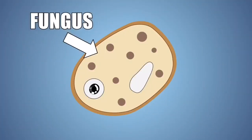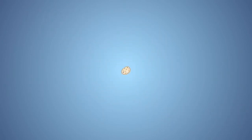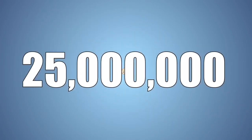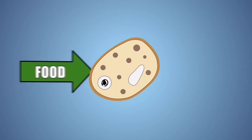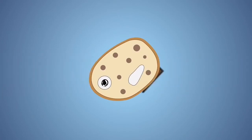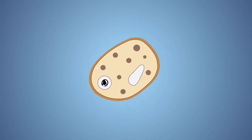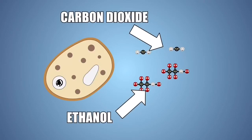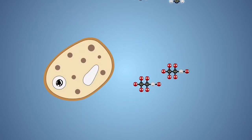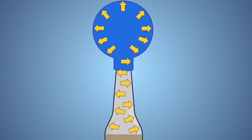Yeast is a fungus, and there are about 160 known species of yeast. Yeast is very small — one gram holds around 25 million cells — and has been used for thousands of years to help bread rise. Yeast feeds on sugars and starches. When the yeast consumes the sugar in our bottle, it breaks it down to be used as energy. Waste products are produced when metabolizing food: the waste produced is carbon dioxide gas and ethanol. The carbon dioxide gas floats out of the liquid into the bottle, producing bubbles, and eventually floats up into the balloon.